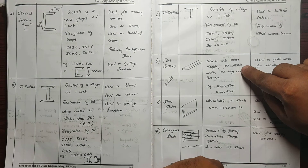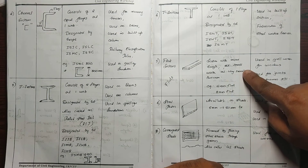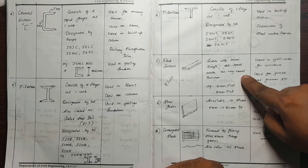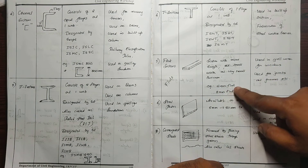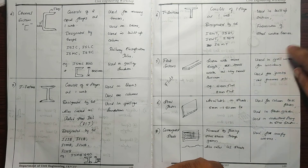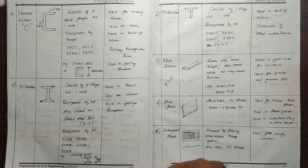The Flat Section has a greater length, small width, and small thickness — very small and thick. It is designated as 6mm or 8mm flat. Flat sections are used in grill bags for windows and as joints.